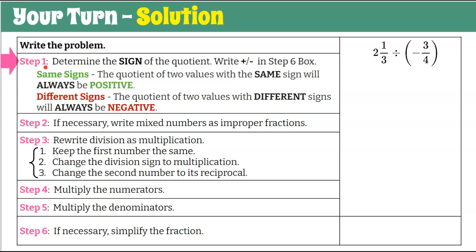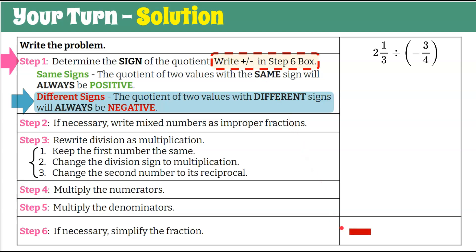Welcome back. Step one: determine the sign of the quotient and record whether it's positive or negative in the step six box. I see a positive and a negative — those are different signs — so the quotient will always be negative. Record that negative sign in the step six box so we cannot forget. Step two: if necessary, write mixed numbers as improper fractions — it is necessary here. Two and one-third: three times two is six plus one is seven, so it becomes seven-thirds. Bring down divide negative three-fourths.